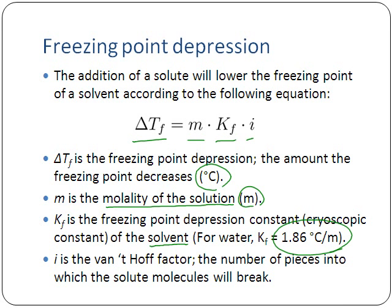Our last variable is i, called the Van't Hoff factor. The Van't Hoff factor deals with the fact that this is a colligative property - colligative properties are based on the number of pieces, not on what they are. The Van't Hoff factor i is the number of pieces into which the solute molecules will break. We need to go into that in more detail before we get back to working out examples on freezing point depression.